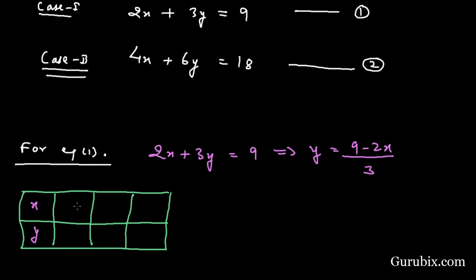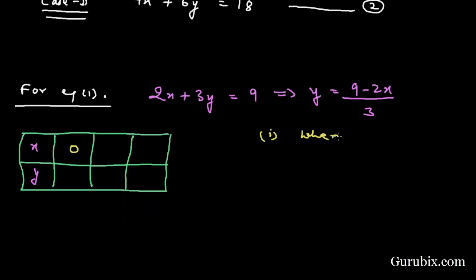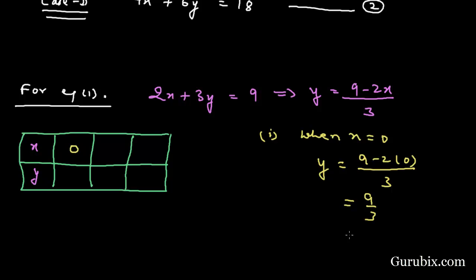If we take X = 0, then Y = (9 − 2×0) / 3 = 9/3 = 3. So when X = 0, Y = 3. This is the first solution set.